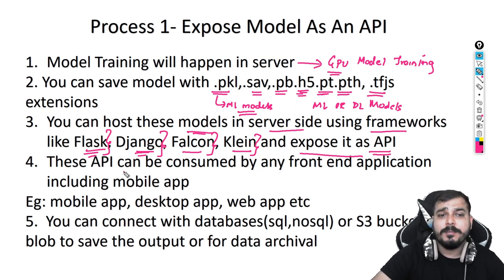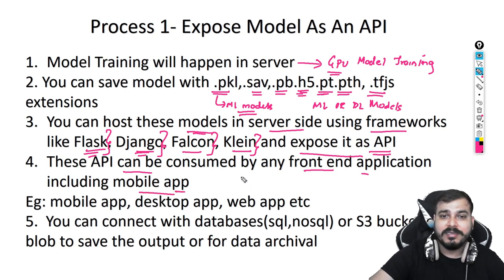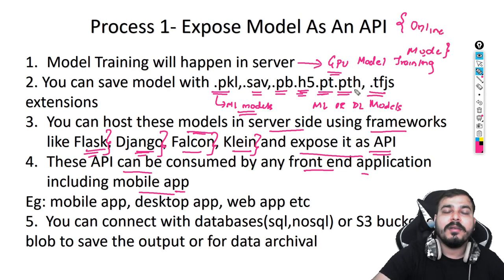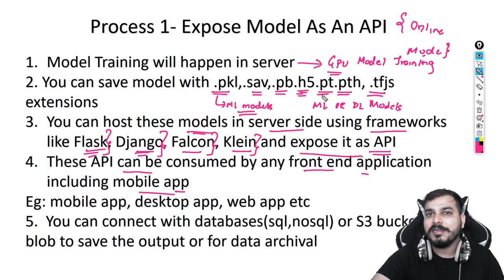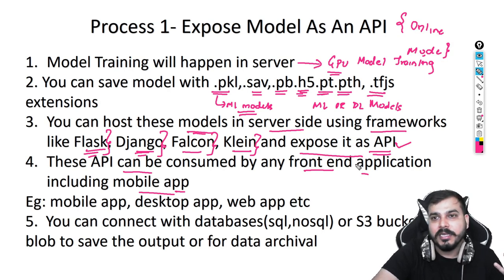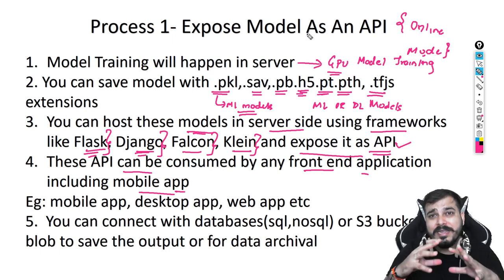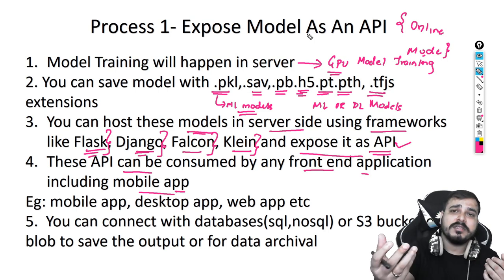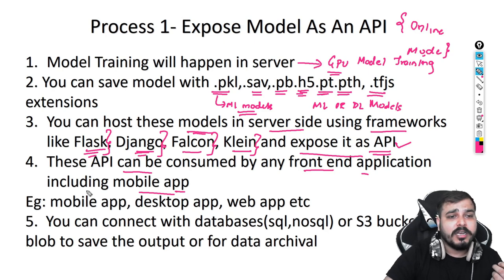Once we have this API, it can be consumed by any front-end application including mobile apps. Remember, this is in online mode — online mode basically means your mobile application or web application needs to have an internet connection. If and only if you have an internet connection will you be able to consume this API. Otherwise, it will throw a timeout error. Many applications currently work in this specific mode — you need internet, then input is sent from the front-end and you get the response. Examples include mobile apps, desktop apps, web apps, and more.